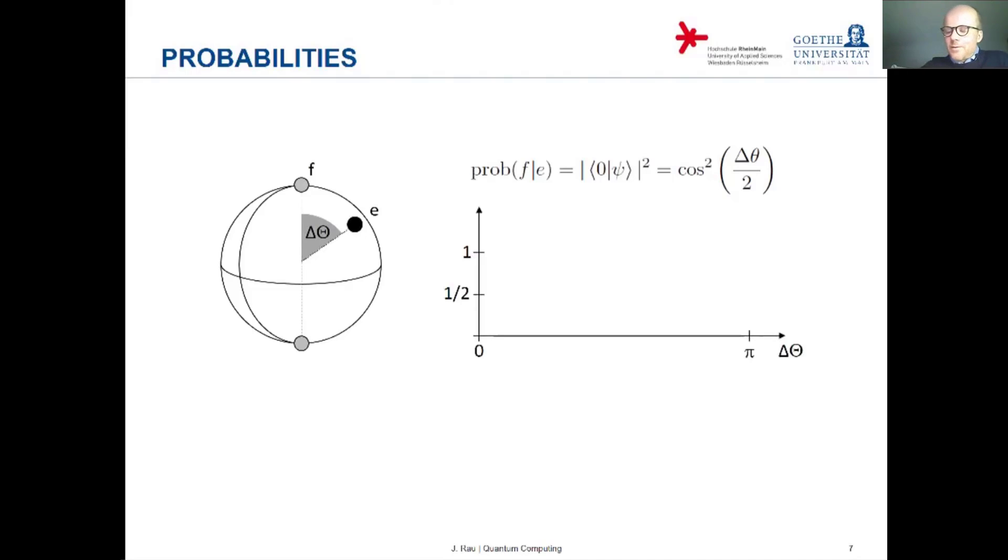I'm sure you all know what the cosine squared looks like, but also for future reference, it may be helpful to look at a few special values. Obviously, when the angle is 0, then this probability is equal to 1.